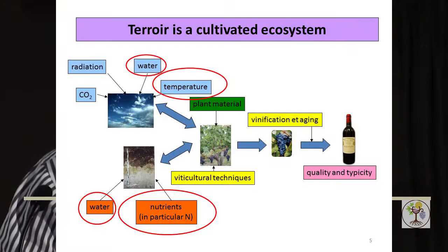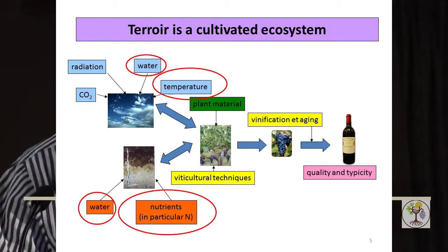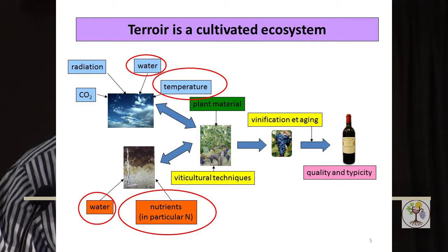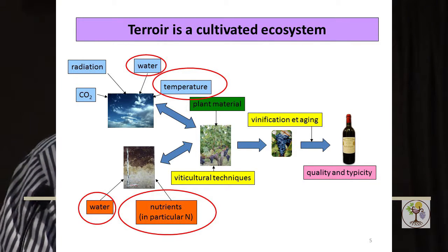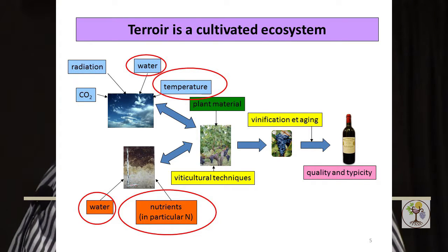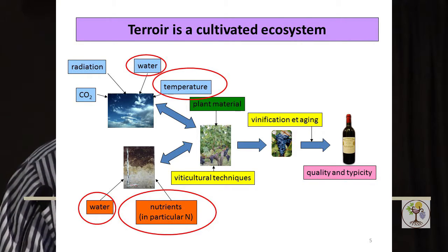Terroir can be considered as an ecosystem, and I like to consider it as an ecosystem because then you put the living organism — in our case the vine — in the middle of that ecosystem. Of course there are also environmental factors like climate with temperature, water, radiation, and CO2. The soil brings water and nutrients, in particular nitrogen, to the vine, so these environmental factors are interacting with the vine. The growers can act on that ecosystem with the choice of plant material, viticultural techniques, and all these interactions are very important in terroir expression. It will give a certain grape composition, and only once the grapes are turned into wine through vinification and adapted aging can you talk about terroir, quality, and typicity brought by the terroir.